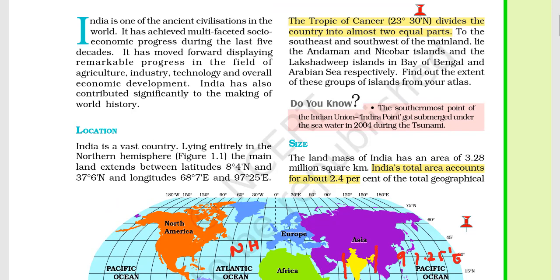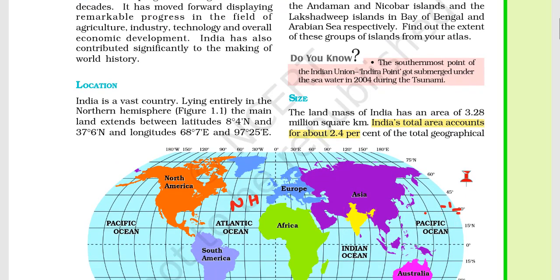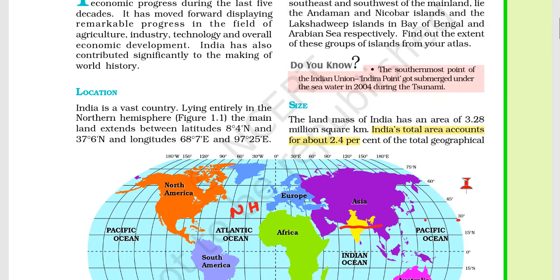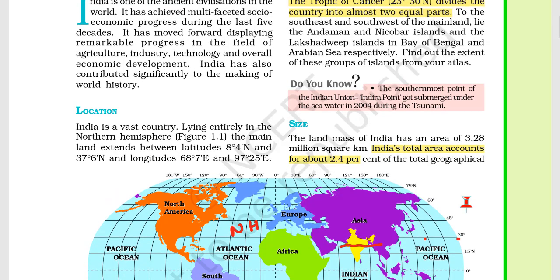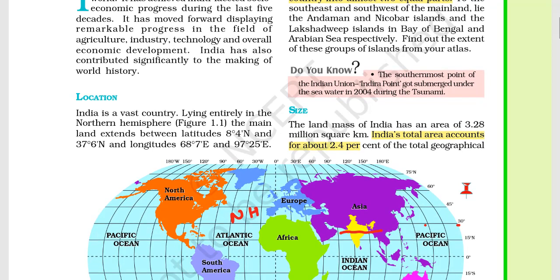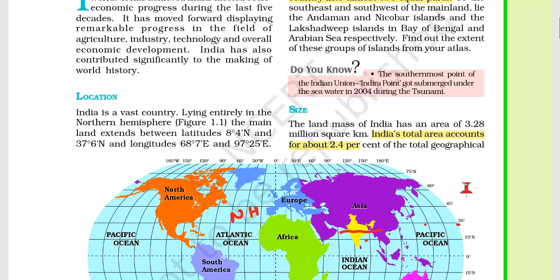This chapter further talks about the Tropic of Cancer, which is on the northern side, and the Tropic of Capricorn on the southern side. India has the Tropic of Cancer passing through it — it almost divides India into two equal halves. In the south east there is the island of Andaman and Nicobar, and in the south west there is the island of Lakshadweep.